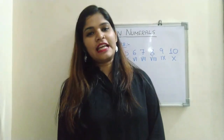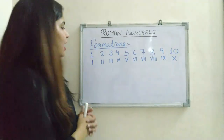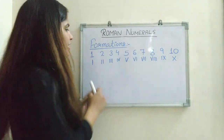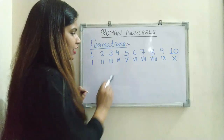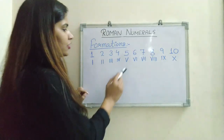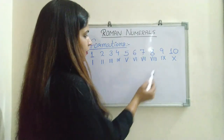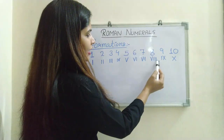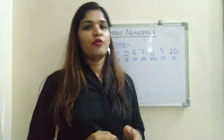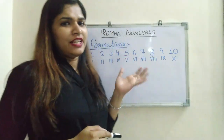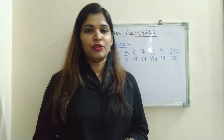Now the second thing to understand is the formation of Roman numerals. Let us see the first 10 Roman numerals. We use single I for 1, two I's for 2, three I's for 3, IV for 4, V for 5, VI for 6, VII for 7, VIII for 8, IX for 9, and X for 10. It is very easy to memorize these ten, but the question is how to write further Roman numerals.